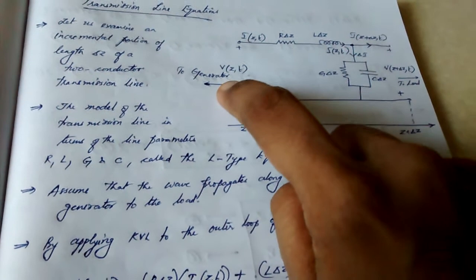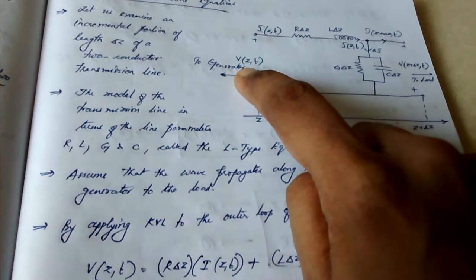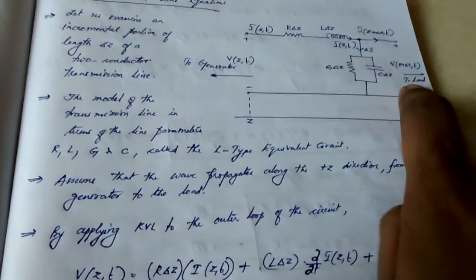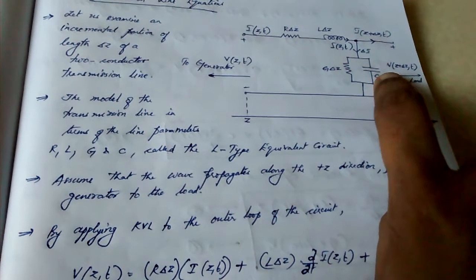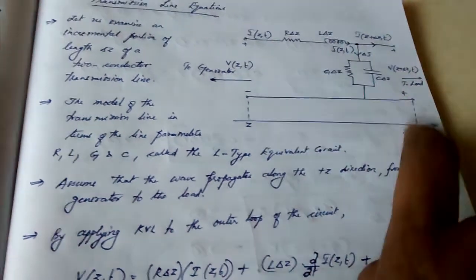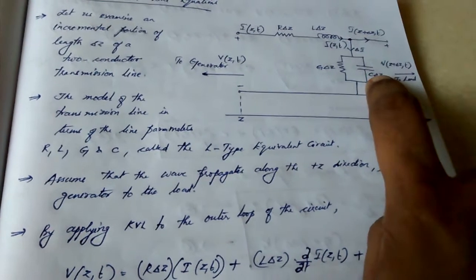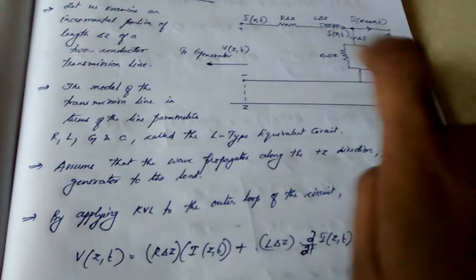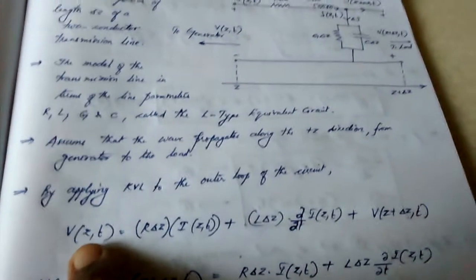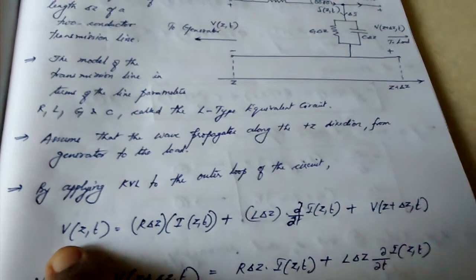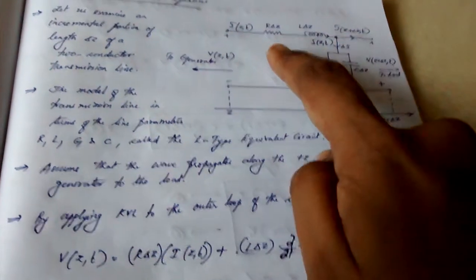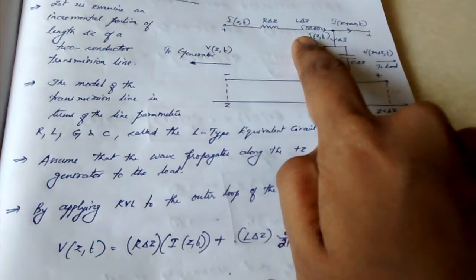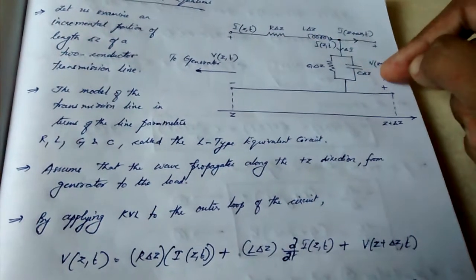The input voltage is V(z, t) and the output voltage is V(z + delta z, t). Applying KVL, we get V(z, t) equal to — here you have a resistance — R times i, plus L di/dt, plus the output voltage.